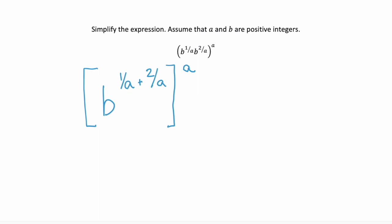When we raise it to the power of 1 over a plus 2 over a, we can add those fractional exponents together, which gives us b to the power of 3 over a. Remember you add your numerators and keep your denominator the same.